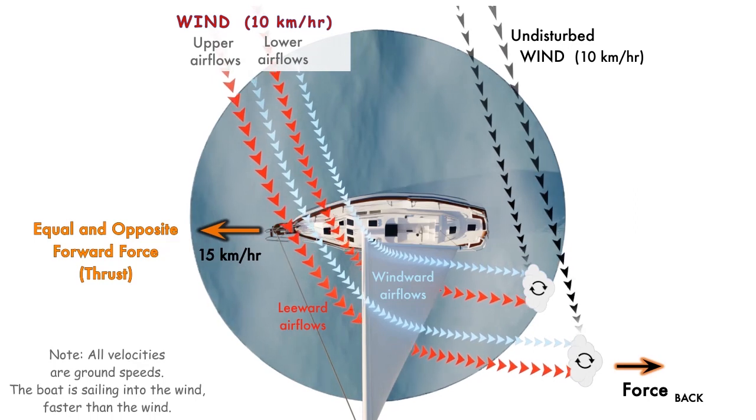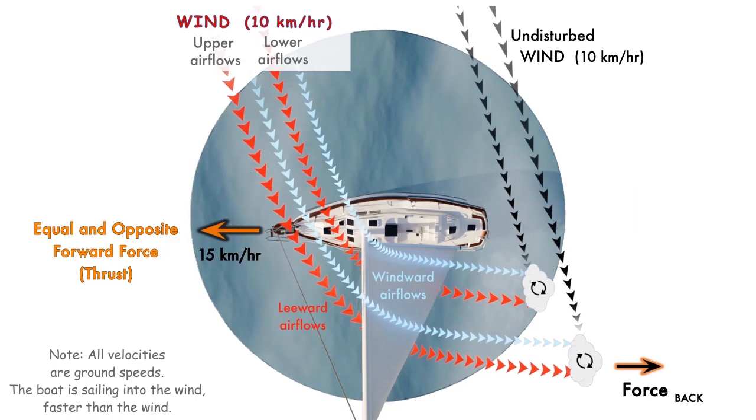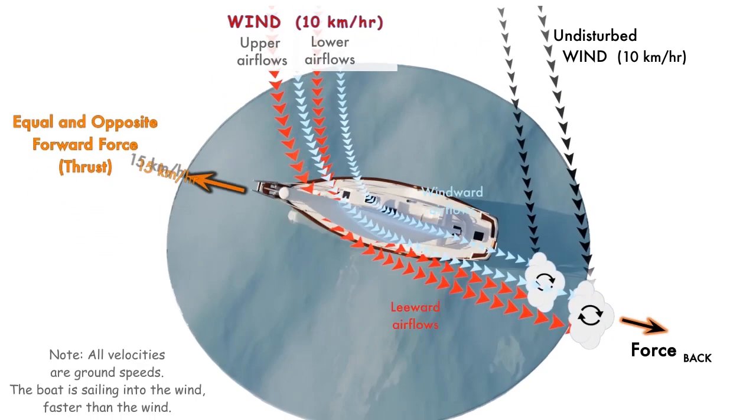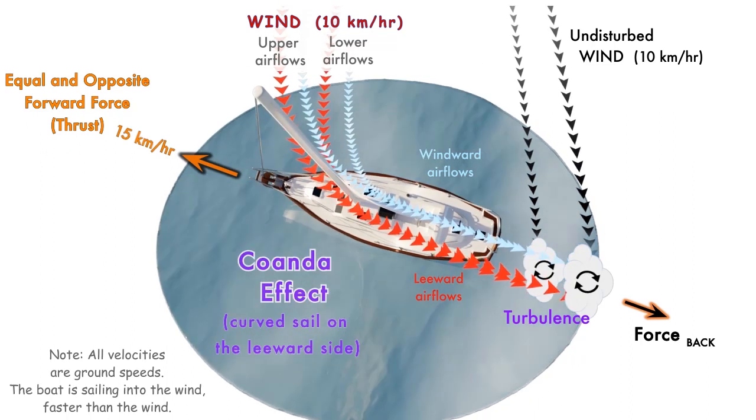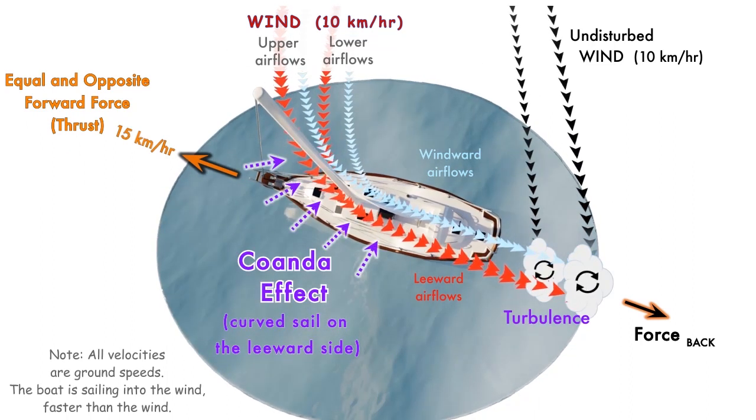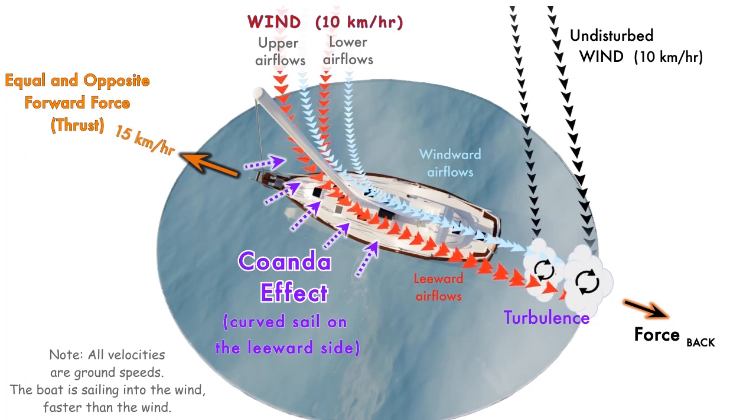The answer lies in analyzing the air flows caused by the sails. The sail's curved surface from the leeward side redirects airflow towards the stern of the boat due to the Coanda effect.